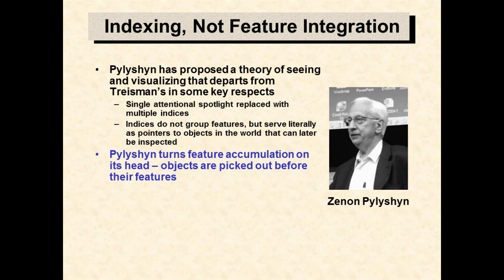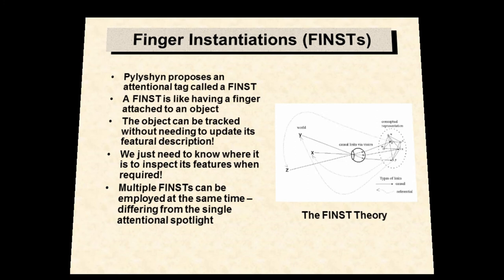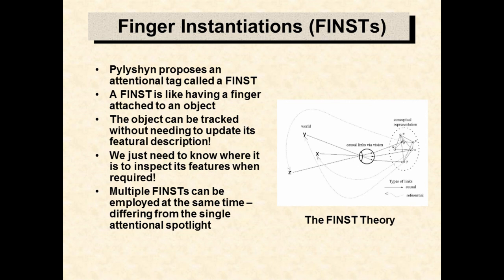Pylyshyn's theory of seeing and visualizing departs from feature integration theory in some radical ways. He replaces the single attentional spotlight with multiple attentional tags called finsts. These tags pick out objects and stick to objects, but do not deliver object features. In Pylyshyn's theory, we detect objects before we detect object properties. Finst stands for finger instantiation — it is an attentional tag that sticks to an external object just as if we were following that object by placing a finger on it, but not looking at the object at the same time. Finsts track objects without delivering visual features.